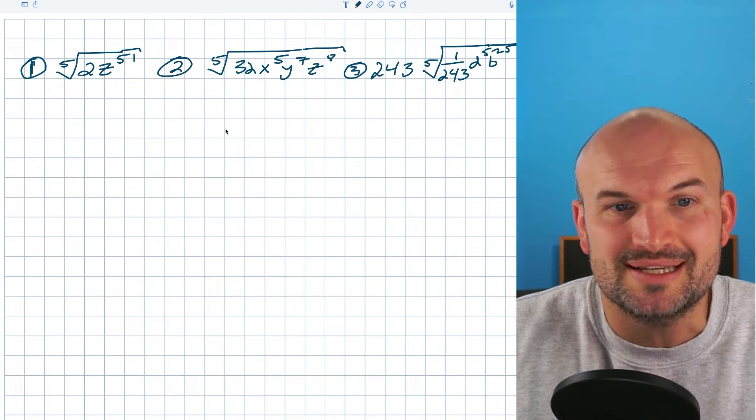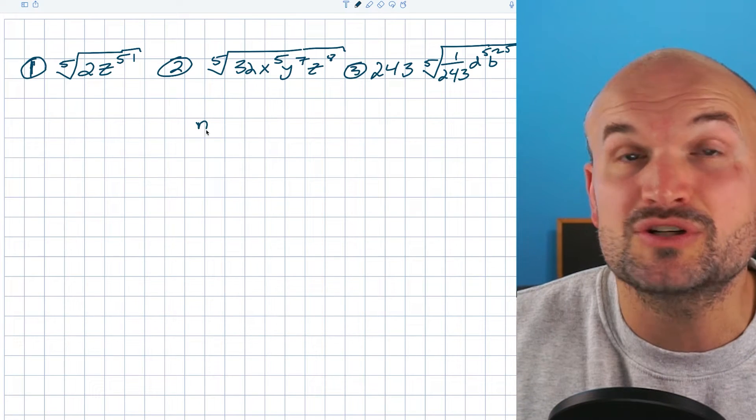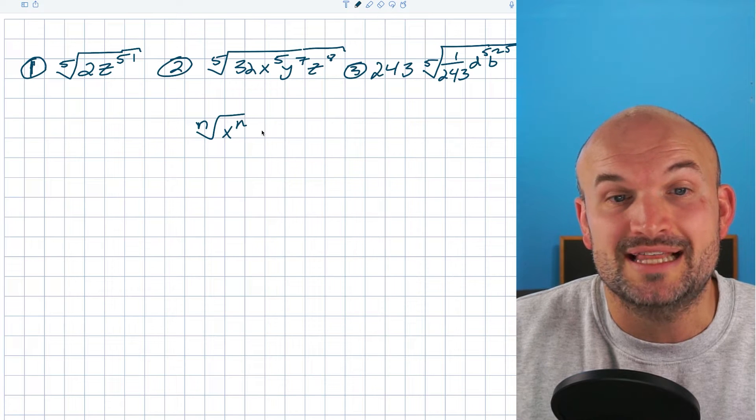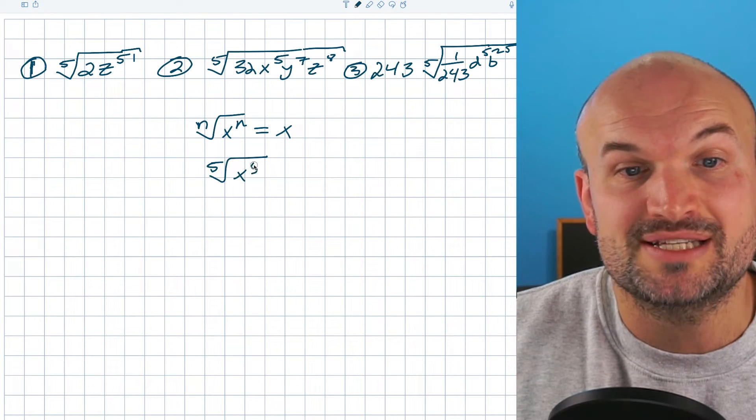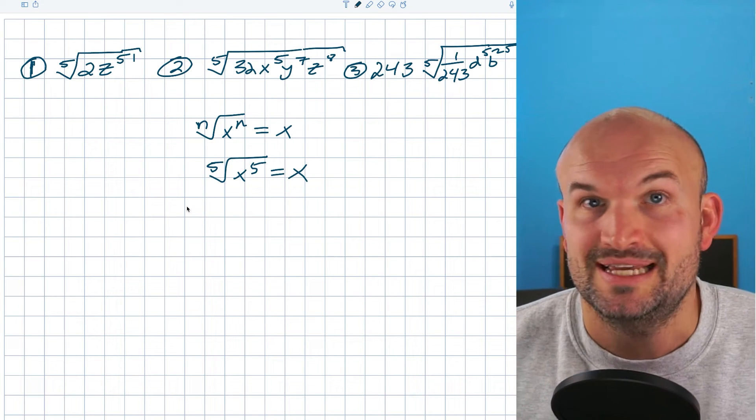But the good news is it's really actually that simple. As long as you remember, when we're trying to simplify radicals, the nth root of something raised to the nth power is just going to be x. So when we have the fifth root, we're just looking for something being raised to the fifth power, which is going to be able to simplify into x.